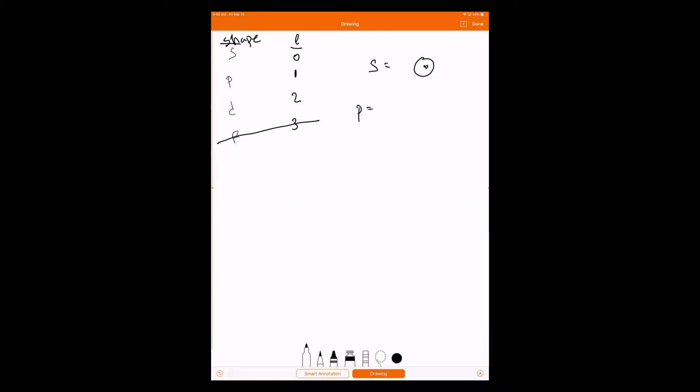A P orbital is in the shape of what we call a dumbbell. That's a P orbital. There's three of them, and they all just line up on different axes. This would be the Y axis. There's another one that lines up on the X axis, and there's another one that lines up on the Z axis.